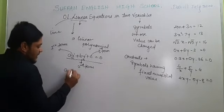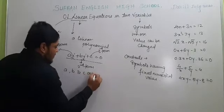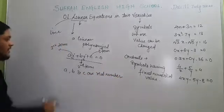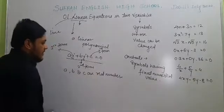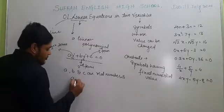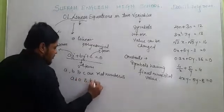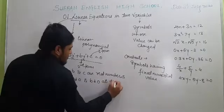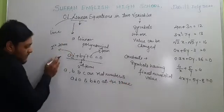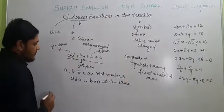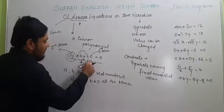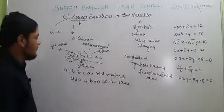Keep in mind that A, B, and C are real numbers. Also, A and B should not both be equal to 0 at the same time. Because if we make A = 0 and B = 0, the whole variable terms become 0, and only the constant C remains — so it would not be a linear equation.